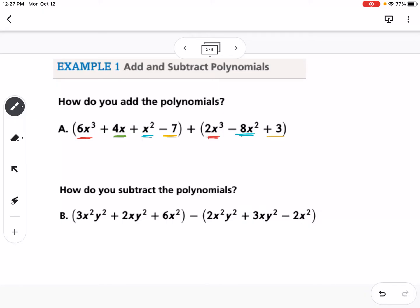So if we have 6x cubed plus 2x cubed, that would be 8x cubed. Then we have x squared plus negative 8x squared, so that would be minus 7x squared. And I'm putting this in standard form as I go, so I'm walking down the powers of x. Then I go to x. I just have the 4x, so it would be plus 4x. And then I have negative 7 plus 3, which would be negative 4. So that is how we add.